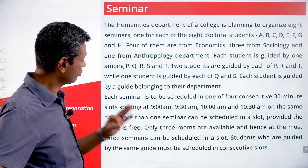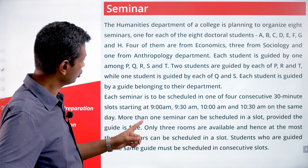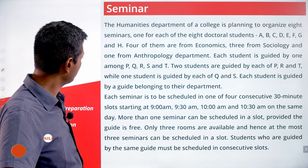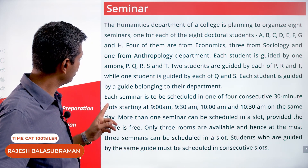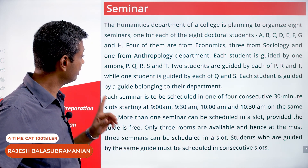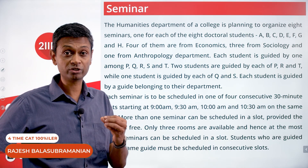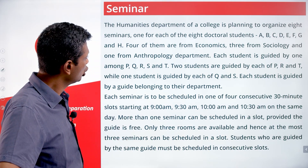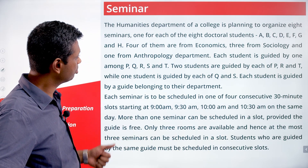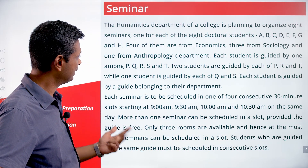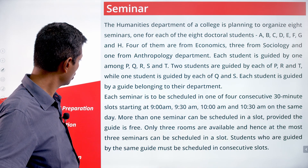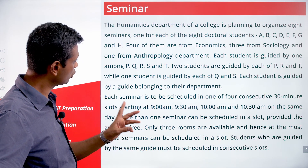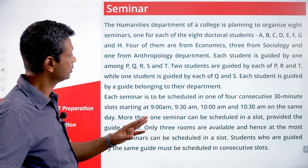Eight students, three departments — four, three, one. Each student is guided by one among P, Q, R, S, and T. So five professors, eight students. Two students are guided by each of P, R, and T, while one student is guided by each of Q and S.